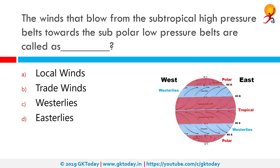The winds that flow from the subtropical high pressure belts towards the subpolar low pressure belts are known as westerlies. Westerlies, or prevailing westerlies, are prevailing winds from the west towards the east in the middle latitudes between 30 and 60 degrees latitude. They originate from high pressure areas in the horse latitudes and trend towards the poles, steering extra-tropical cyclones in this general manner.